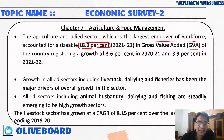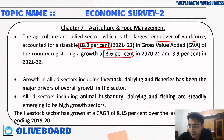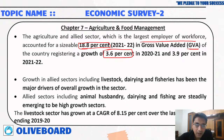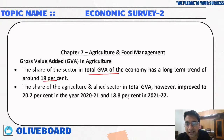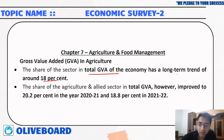Chapter 7 covers agriculture and food management. The agriculture sector witnessed a growth of 3.6 percent in 2020 and 3.9 percent in 2021-22, even during COVID times. The share of agriculture and allied sectors in total gross value addition improved from 18.2 percent to 20.2 percent.